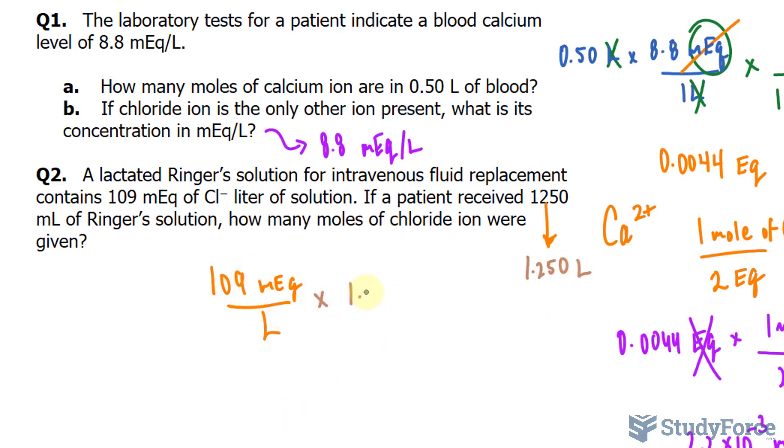I'll multiply this ratio to 1.250 liters. That will cancel out with that, giving us milliequivalents. And just as before, we want it to go from milliequivalents to equivalents. So, we multiply this by 1,000 milliequivalents per one equivalent. That ensures that we end up with equivalent.